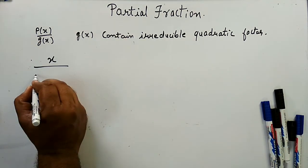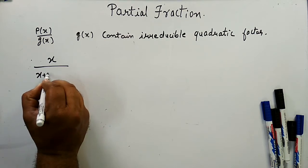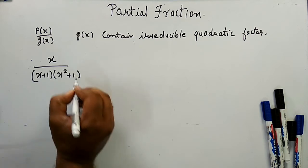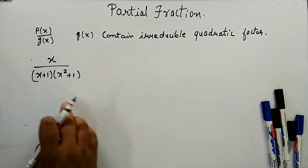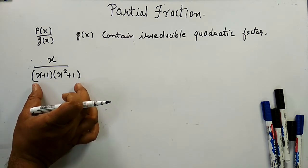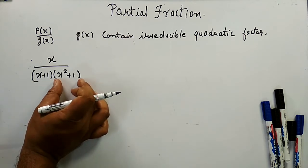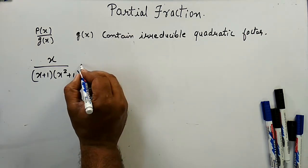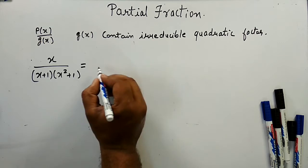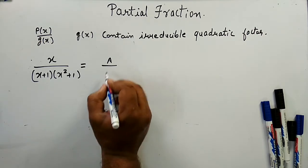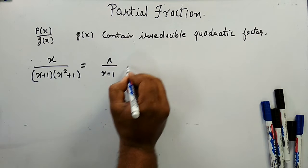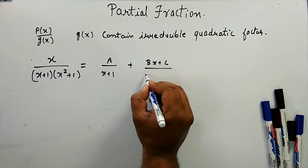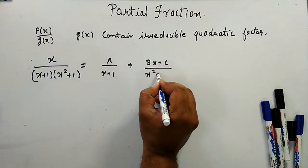The second example is x / ((x + 1)(x² + 1)). In the denominator, x² + 1 is an irreducible quadratic factor. The partial fraction form is A/(x + 1) + (Bx + C)/(x² + 1).